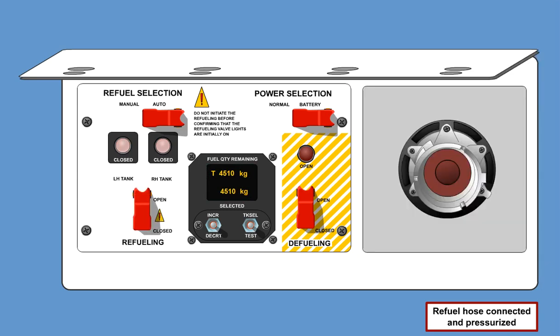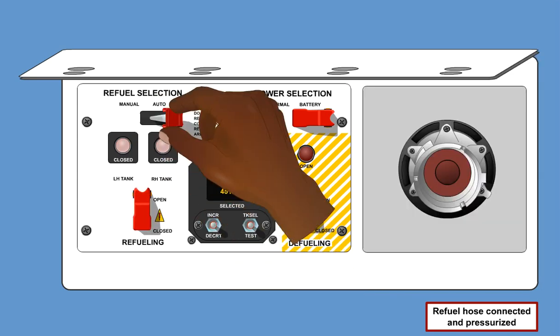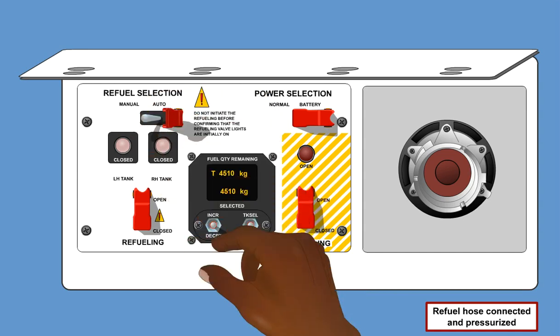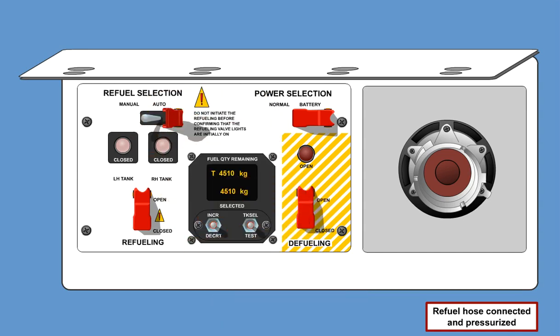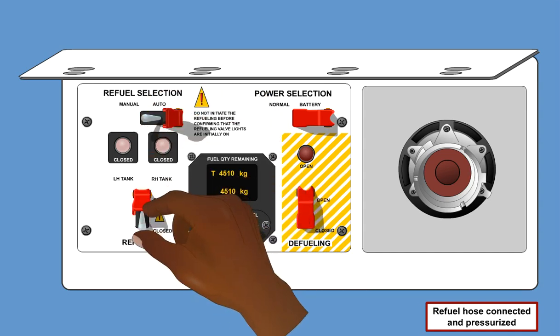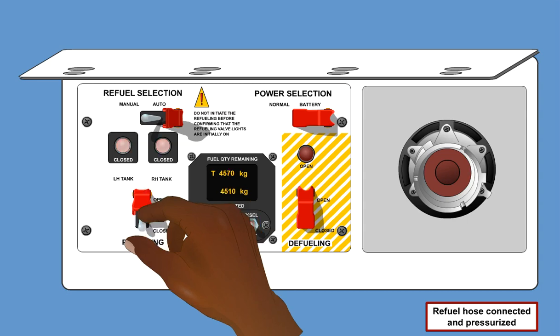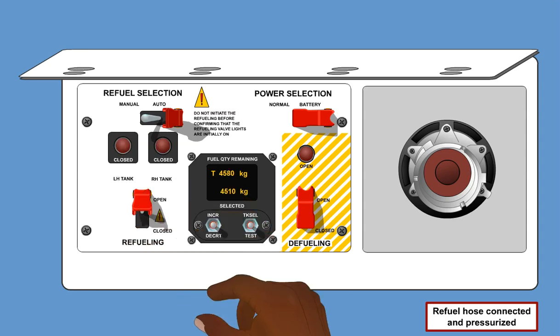It is possible to override the FCU by selecting manual on the refuel panel. Then the refuel valves can be controlled manually with the refueling switch.